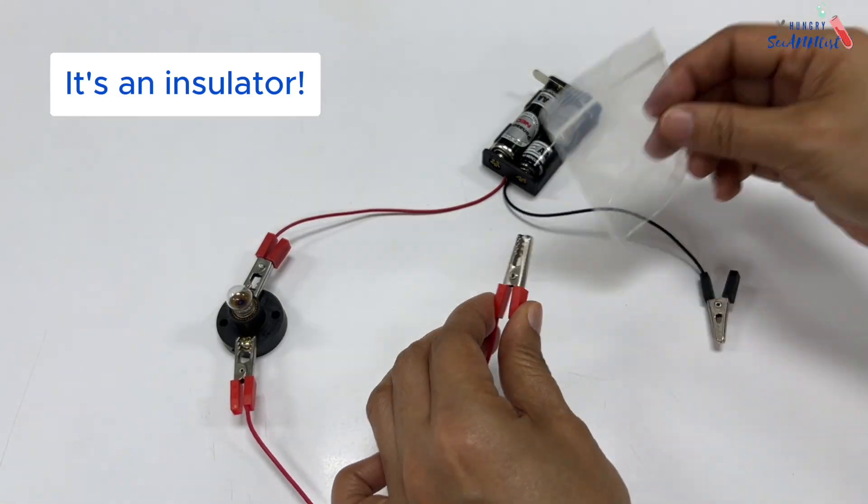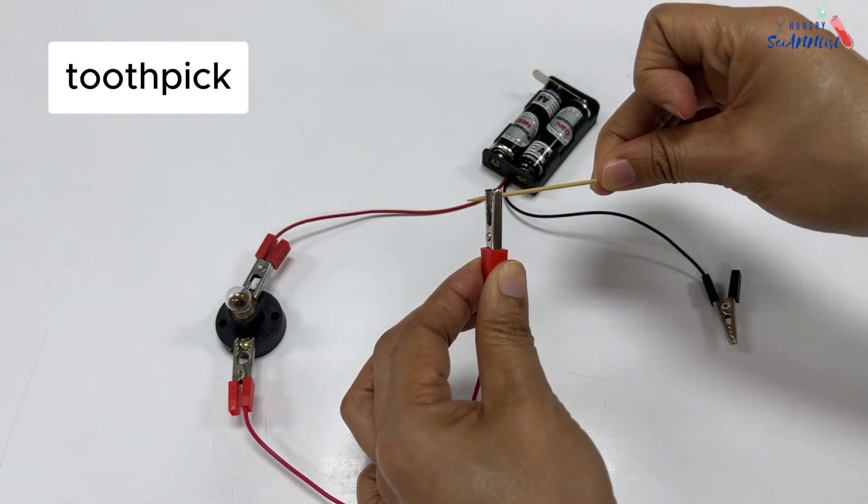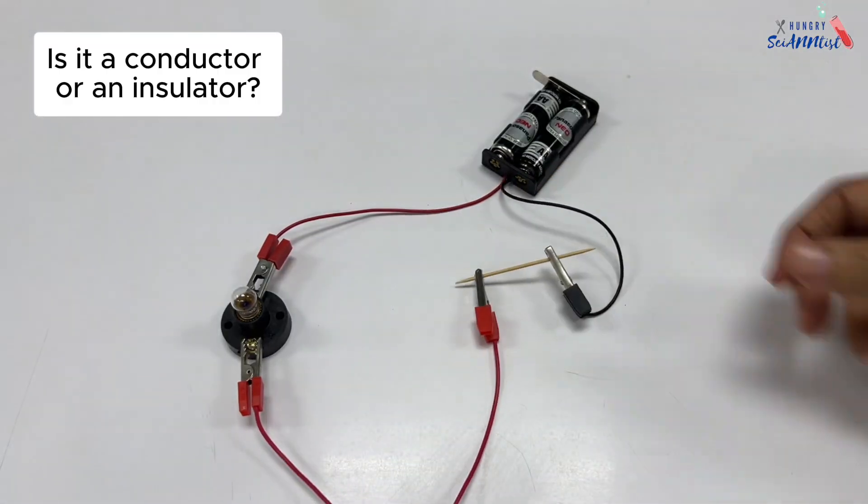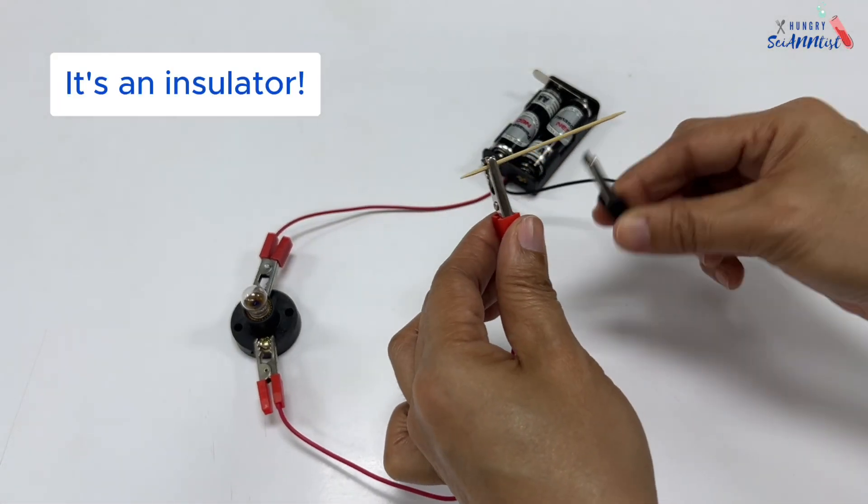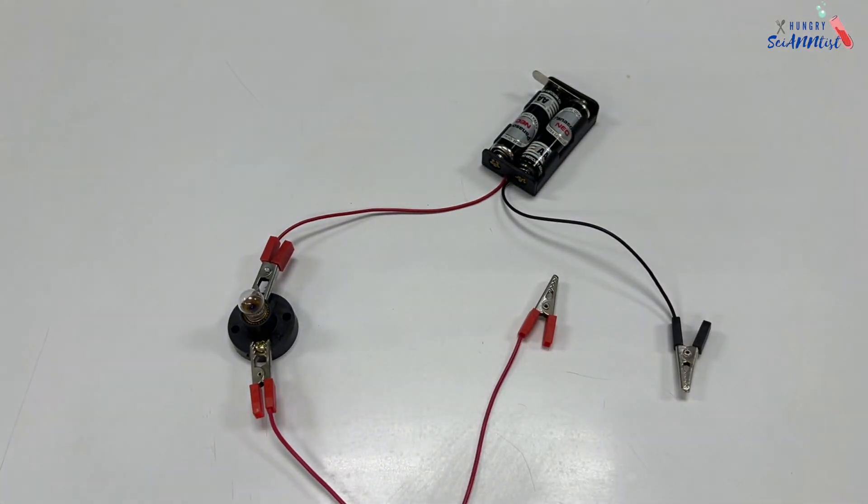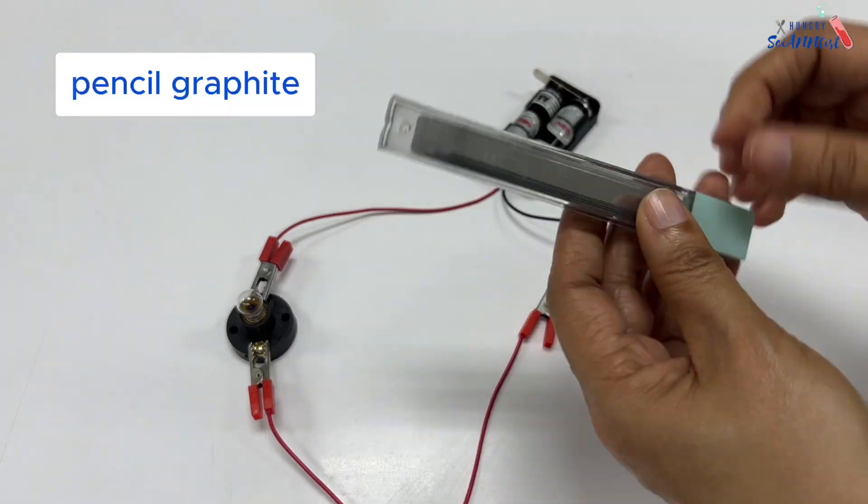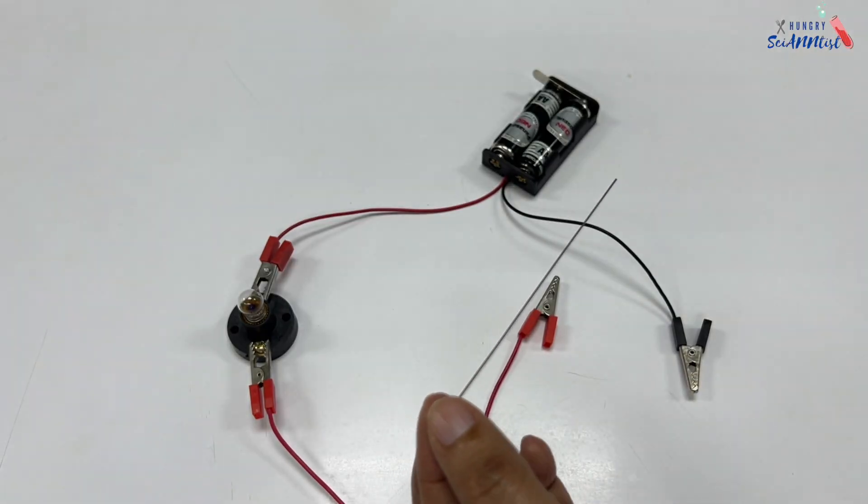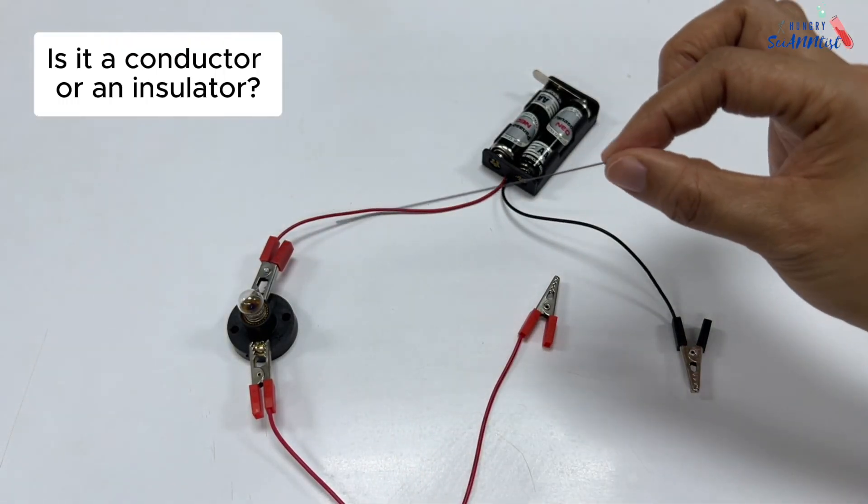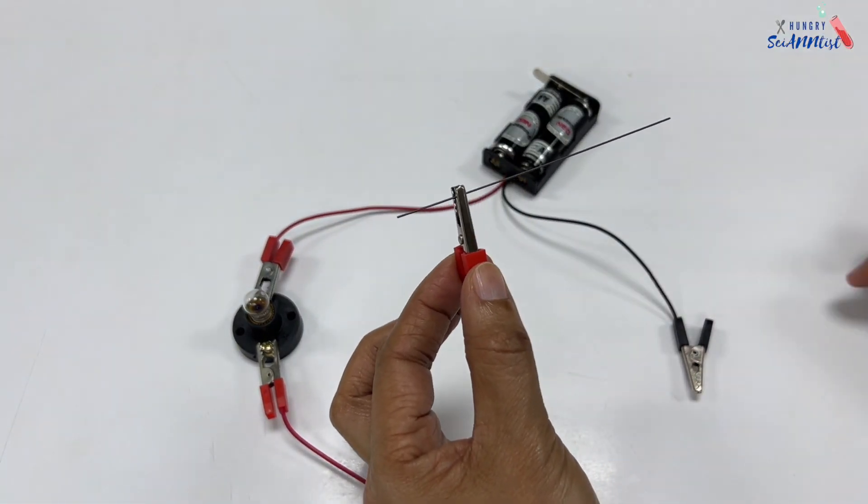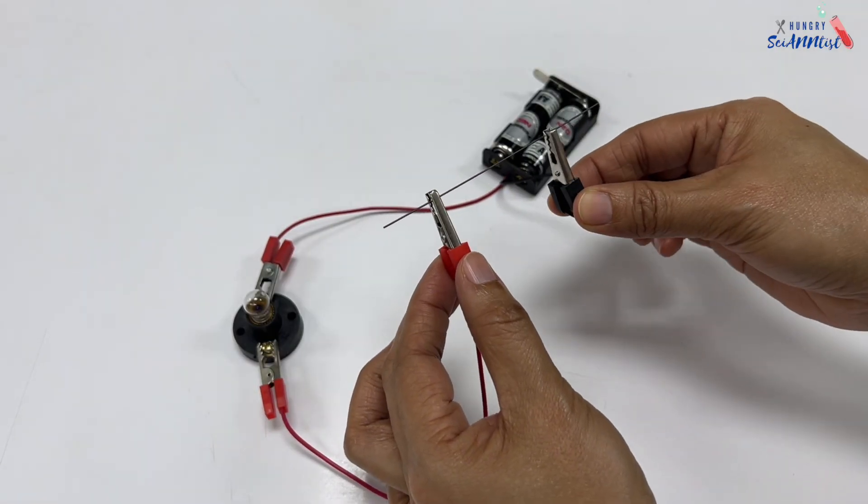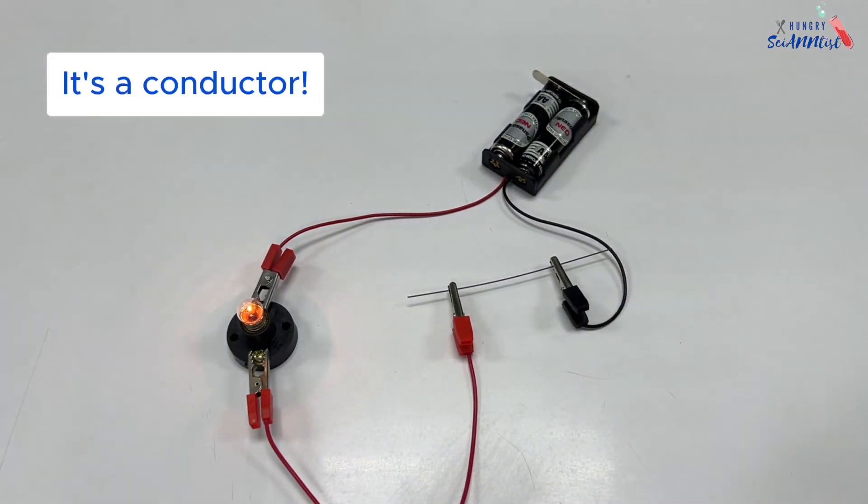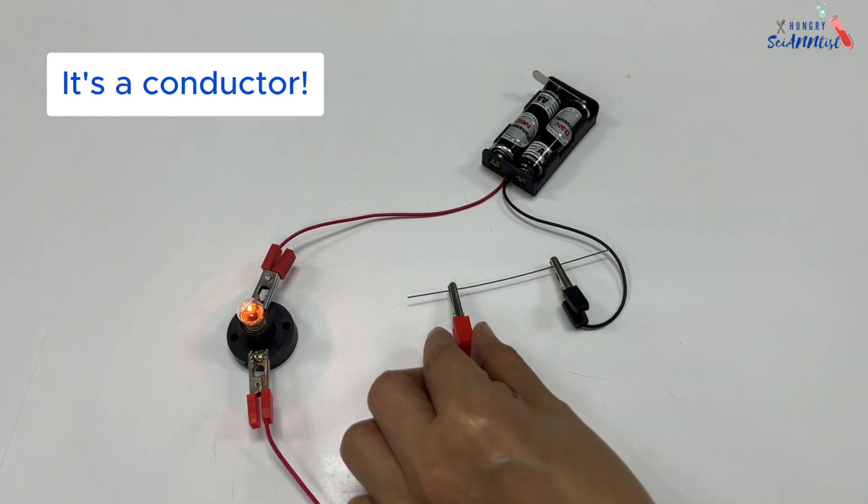Plastic is an insulator. A toothpick is an insulator. Pencil graphite is a conductor.